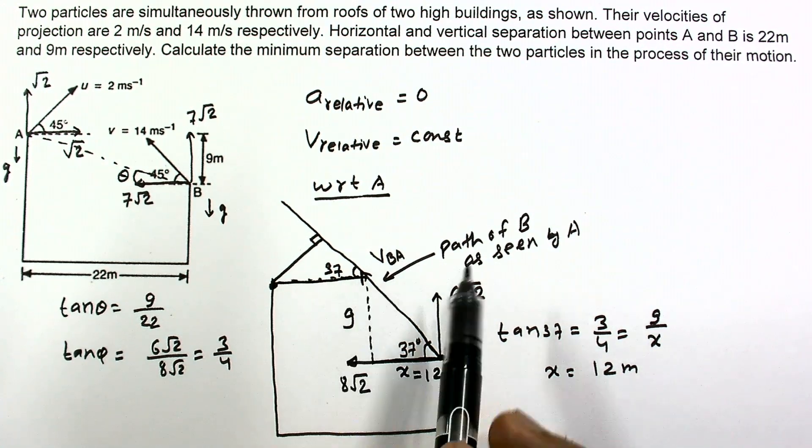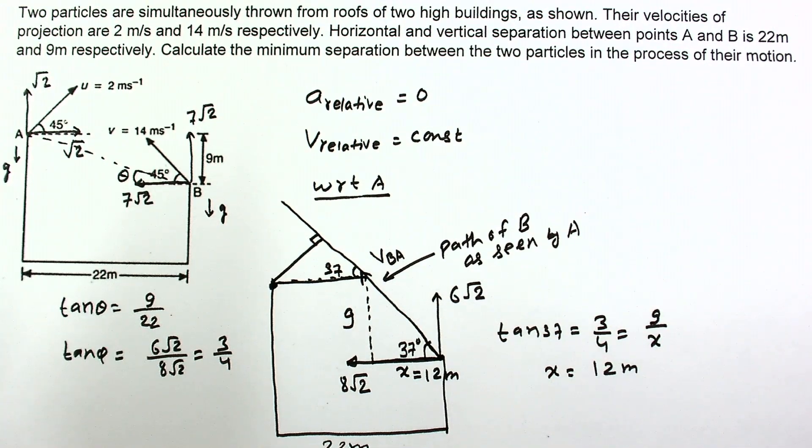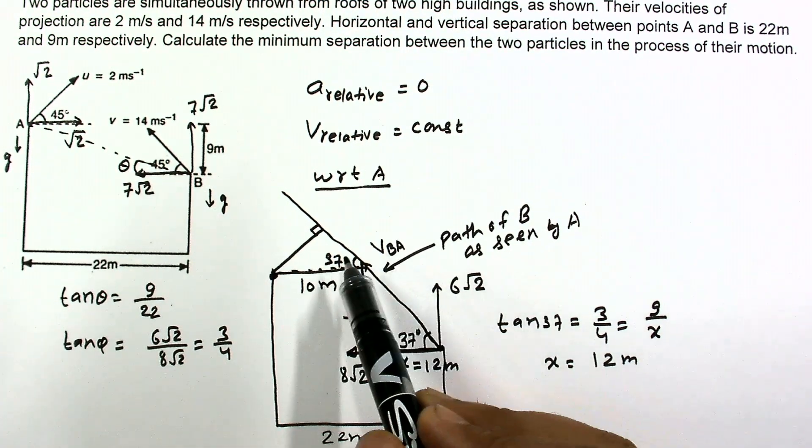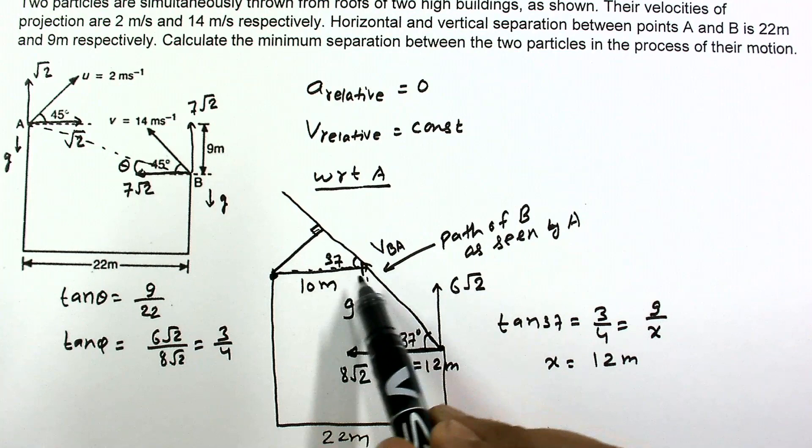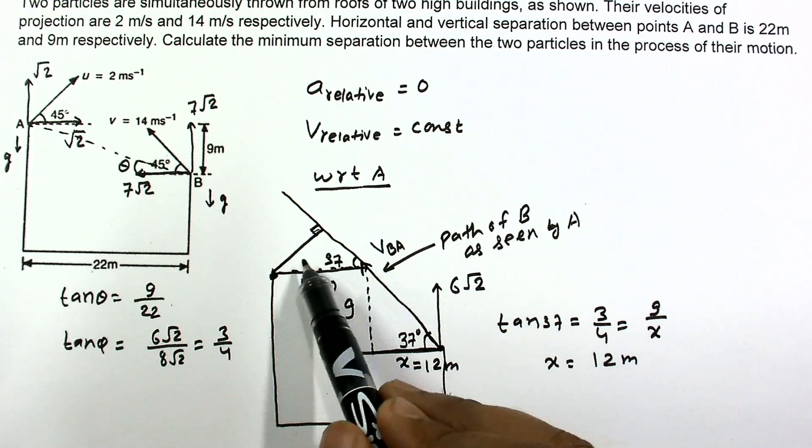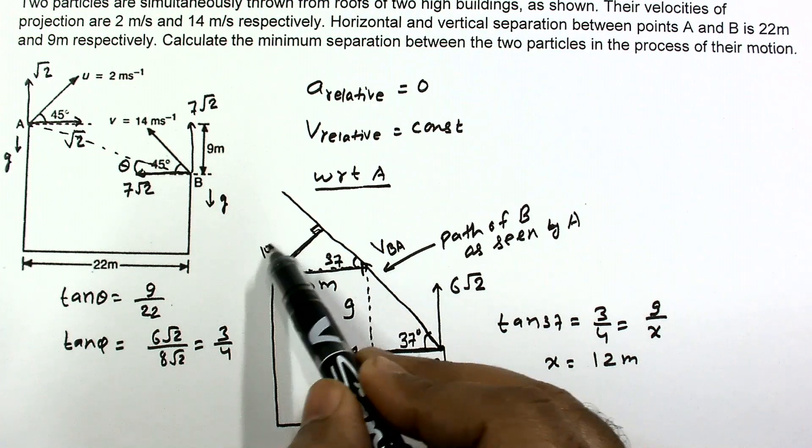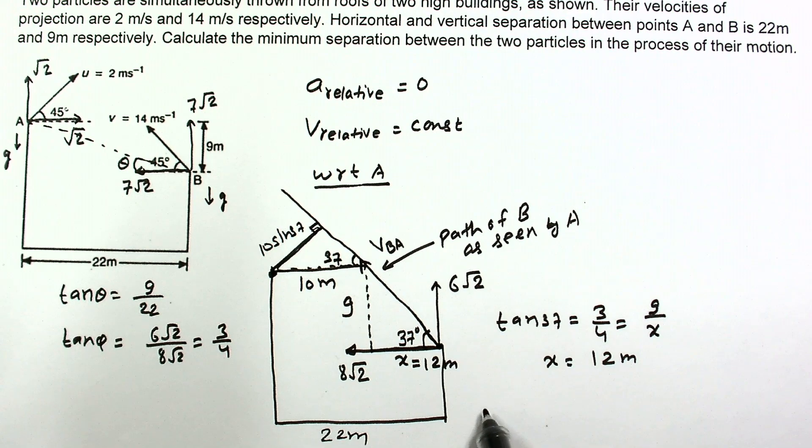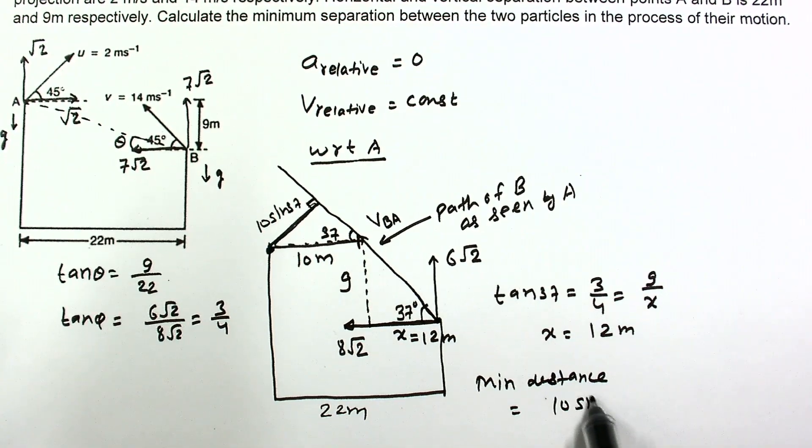This distance is 12. Since the total distance is 22, this distance will be 10 meters. Now in this triangle, the hypotenuse is 10 meters, so minimum distance is 10 sin 37. Sin 37 has a value of 0.6, so minimum separation is 6 meters.